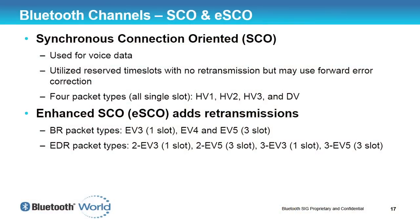SCO packets, on the other hand, are used for voice data. The key is that they are timed to occur at a strictly periodic interval, which means you can guarantee the latency of the voice link. Without this, latencies grow to the worst-case scenario. If you're using an ACL link for voice with a Wi-Fi chip in the same device, you'd have to account for the maximum possible Wi-Fi disruption time. With SCO and ESCO, you use reserved time slots so you know exactly when data will be transmitted and can guarantee the required latency.